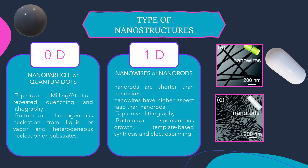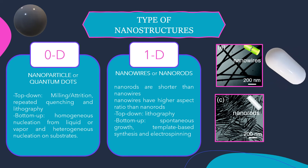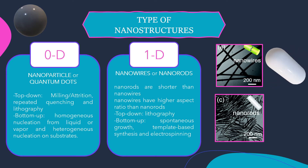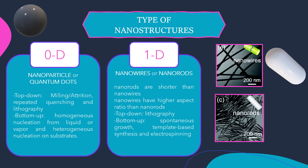One-dimensional nanostructures can be called by many names, such as whiskers, fibers or fibrils, nanowires, and nanorods. Generally, nanorods are shorter compared to nanowires, and nanowires also have a higher aspect ratio than nanorods. There are four techniques to synthesize 1D nanostructured materials, as mentioned in the slide.